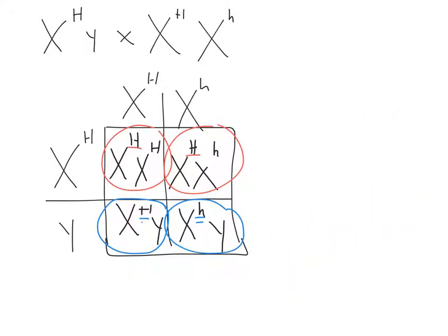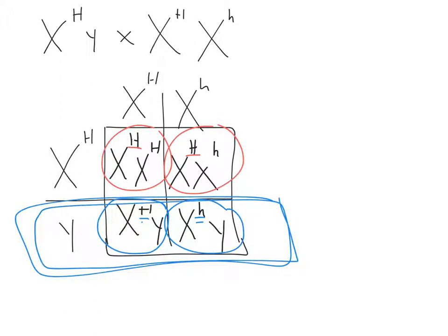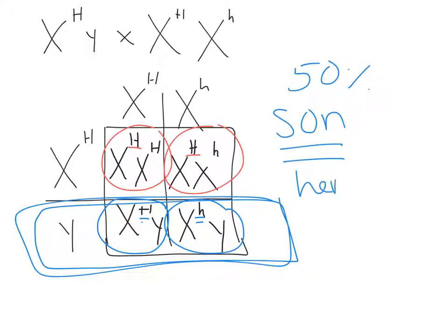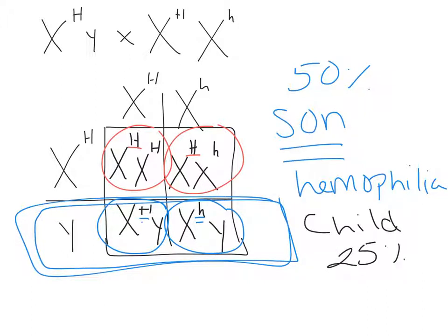The second part of this problem asks about the chance of their son having hemophilia. Because we are just talking about their son, we focus on the bottom two boxes. Out of those two possibilities, one box has a child with hemophilia, which means there is a 50% chance that their son will have hemophilia. This would be different if asked about any child having hemophilia — the chance of any child having hemophilia is 25%, so at that point we look at the whole Punnett square, not just the bottom two boxes.